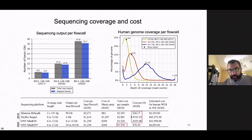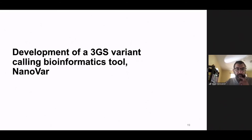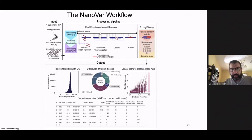The cost continues to decrease. Roughly, if you want to do this whole genome sequencing, it will cost about $1,000 US dollars per genome. We have developed a new tool called NanoVar, optimized for Nanopore but also works for PacBio. It takes 1 to 2 micrograms of DNA, runs a pipeline using minimap for alignment and variant characterization, then re-evaluates with BLAST.